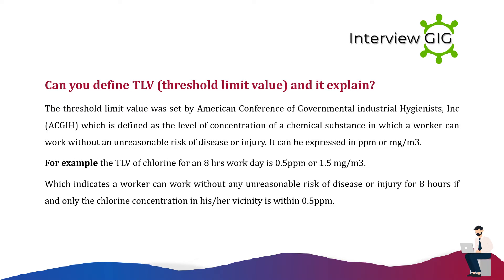Can you define TLV — Threshold Limit Value? The threshold limit value was set by the American Conference of Governmental Industrial Hygienists (ACGIH), defined as the level of concentration of a chemical substance at which a worker can work without an unreasonable risk of disease or injury. It can be expressed in ppm or milligrams per cubic meter. For example, the TLV of chlorine for an eight-hour workday is 0.5 ppm or 1.5 milligrams per cubic meter, indicating a worker can work safely if the chlorine concentration in the vicinity is within 0.5 ppm.